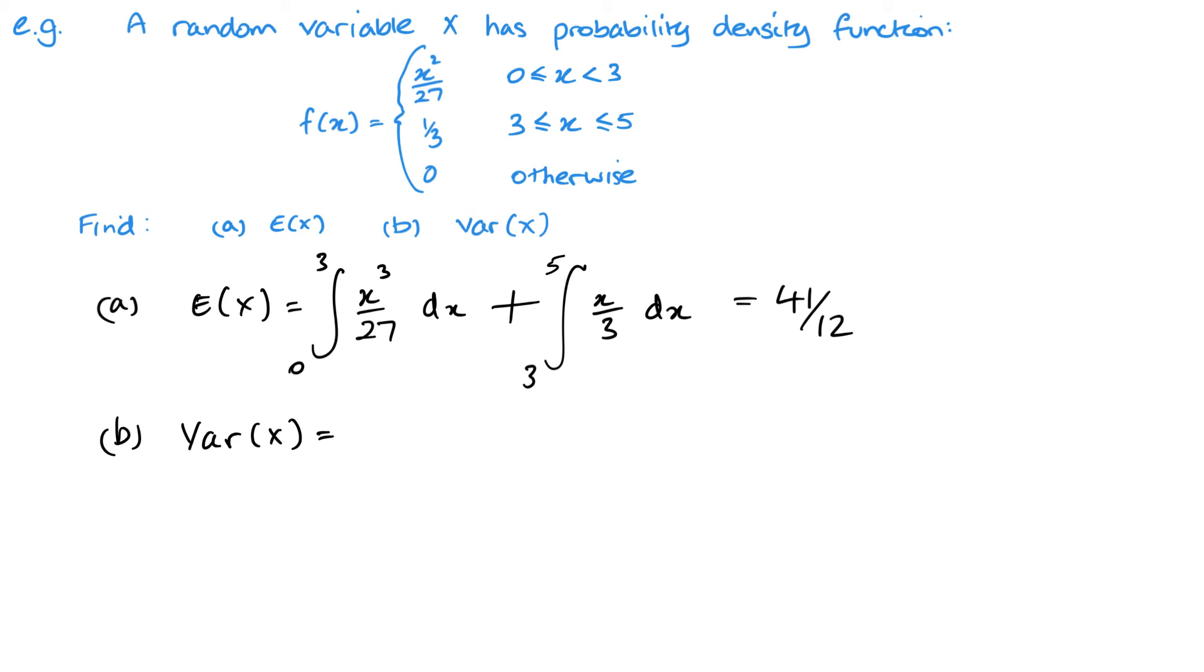Finding the variance will be very much the same, so I'm going to integrate between the same limits, but obviously I'm multiplying by x squared. So this is going to be x to the power of 4 over 27. I'm going to add my second one, and this is going to be x squared over 3. Then I mustn't forget to subtract my mean squared, so in this case that's the 41 over 12 squared.